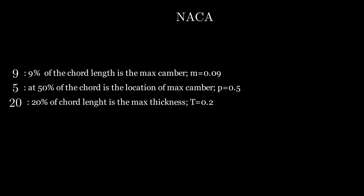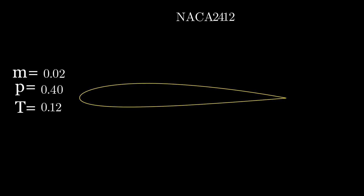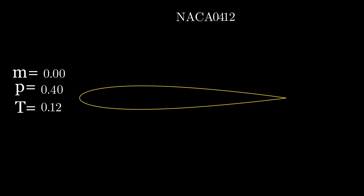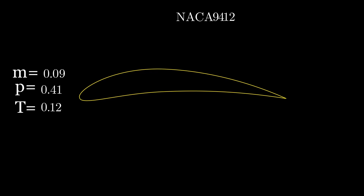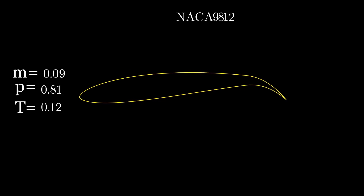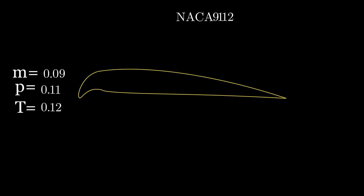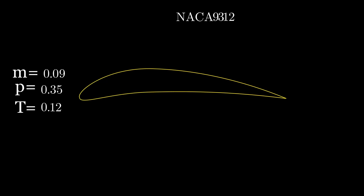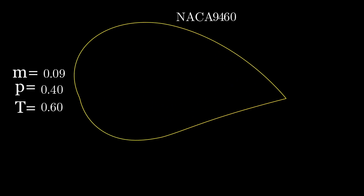In the next animations we'll see how these values change the airfoil. When varying M, if we bring it down to zero we get what is referred to as a symmetrical wing since there's no camber. Whenever we're varying P we're changing the location of the camber along the chord, which is why it looks like it's doing the worm. And whenever we're increasing T we're increasing the thickness of the overall airfoil.